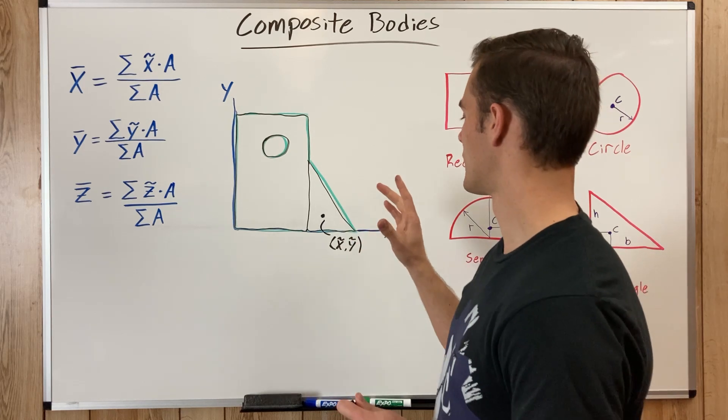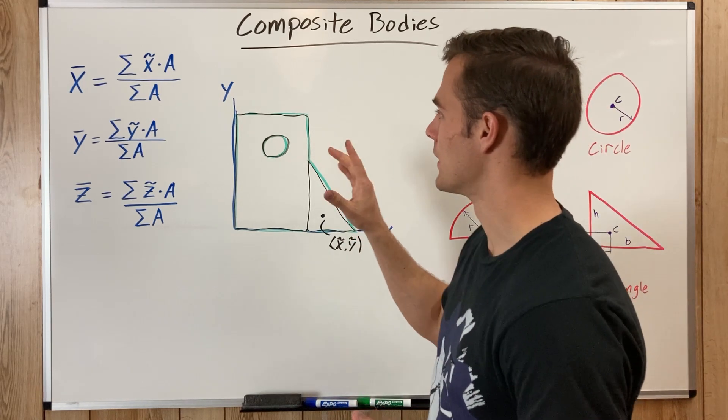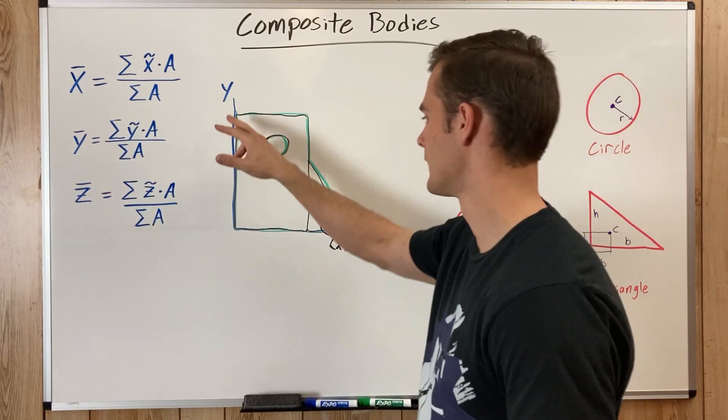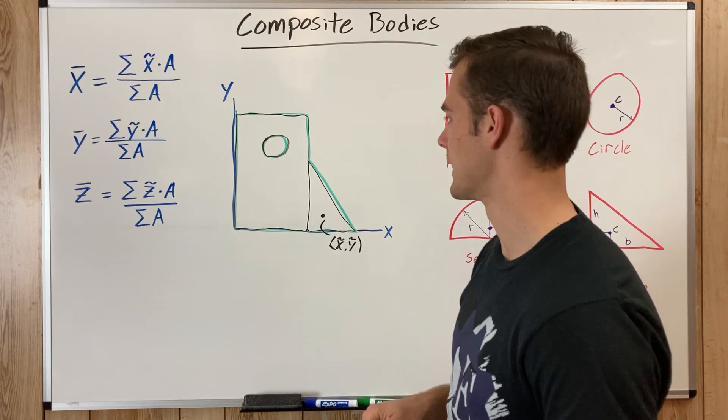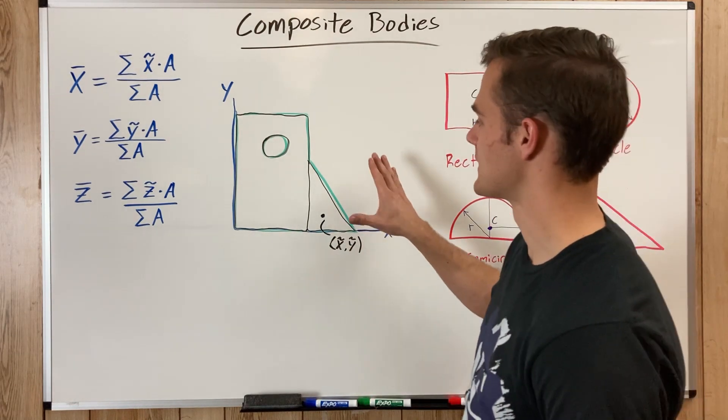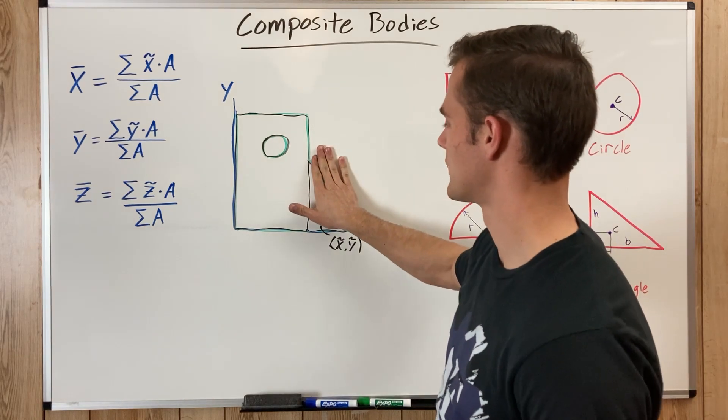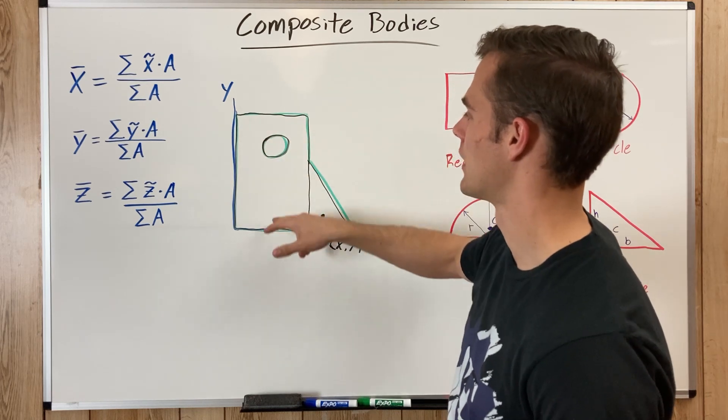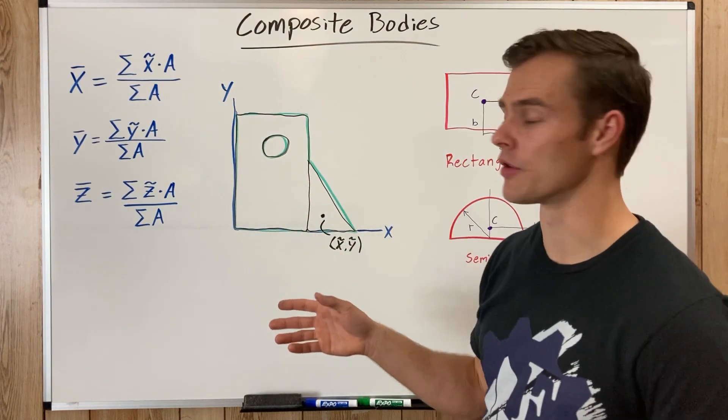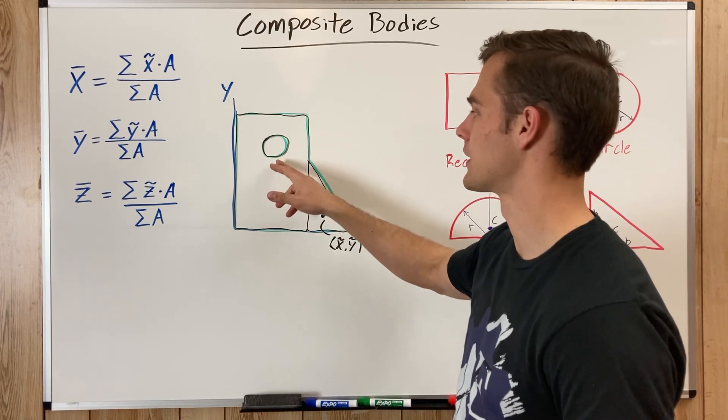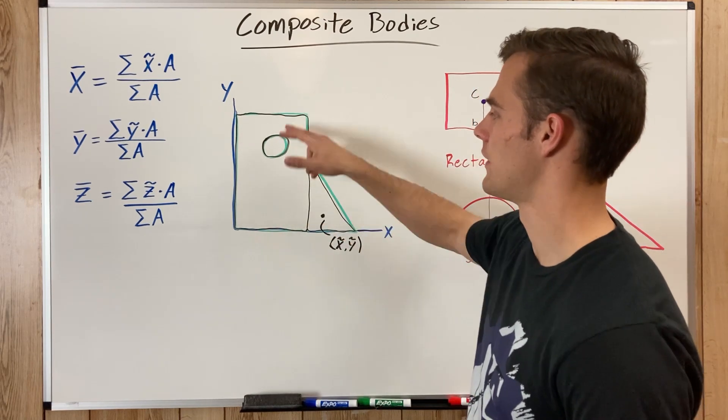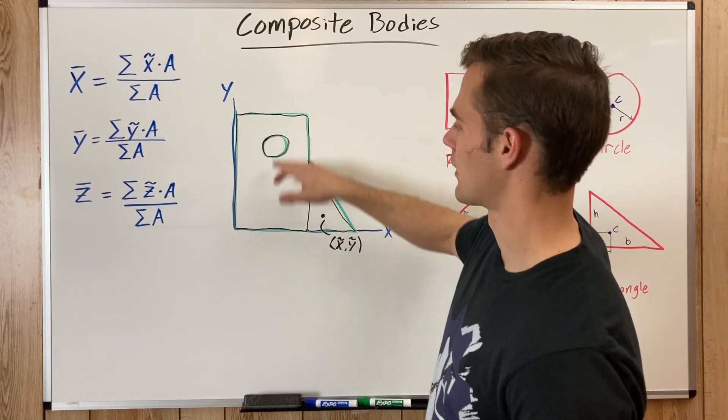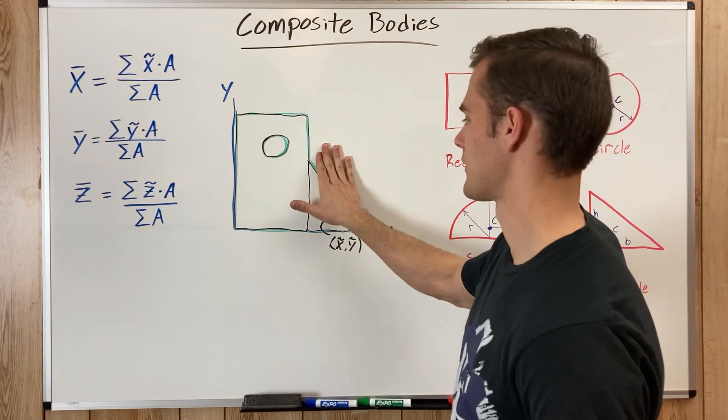And so, with that being said, we can plug those into our equations and find our coordinates x bar and y bar that are based on the coordinate system we set up in the beginning. Now, something else to consider is that if we were to take away the triangle part of the shape, this object would be symmetrical about its center. And if an object is symmetrical, you know that the centroid is going to lie somewhere along that axis of symmetry. And so, that center of mass would lie somewhere along the middle of this object if we took off this triangle.